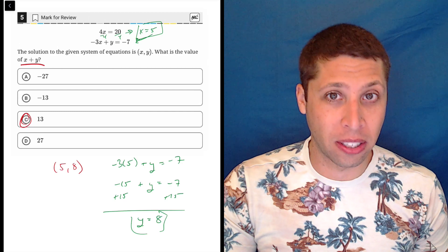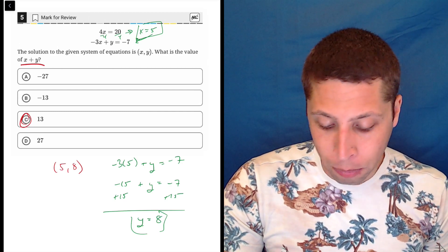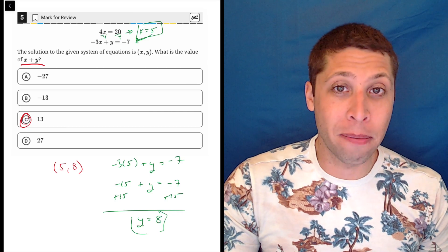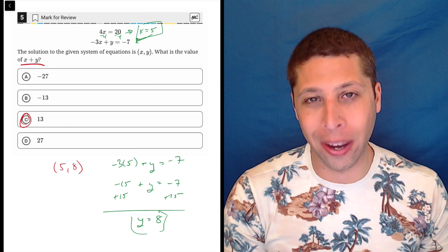And even just notice, A and B, or B and C rather, they have the same number, but with a negative. And so I would be nervous already that if I lose a negative, I'm going to get this wrong and never know it.